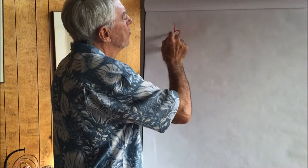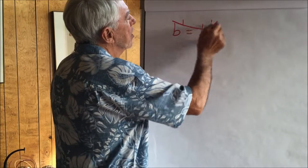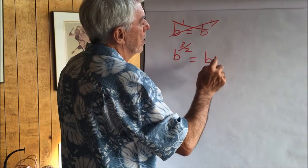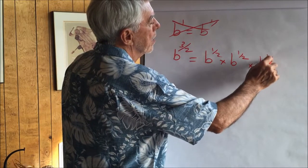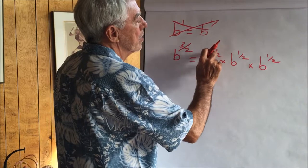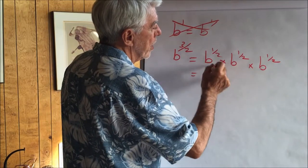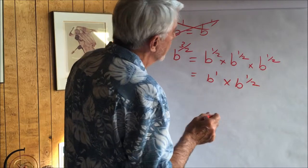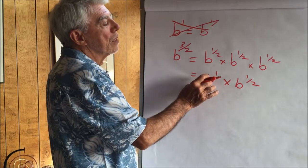B to the first is equal to b to the one. Let's say b to the three halves equals b to the one half times b to the one half times b to the one half. If we add these exponents — a half plus a half plus a half — we get three halves. We can rewrite this by grouping: that's b to the first times b to the one half. So b to the three halves means b times the square root of b.